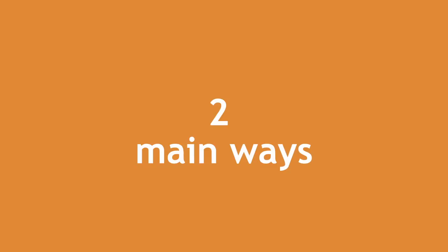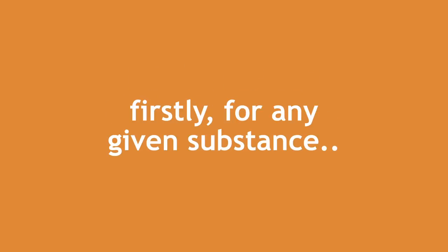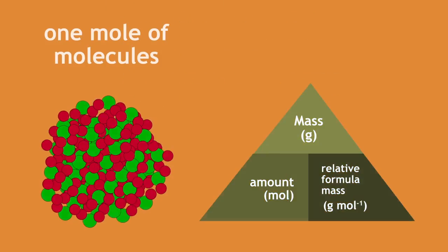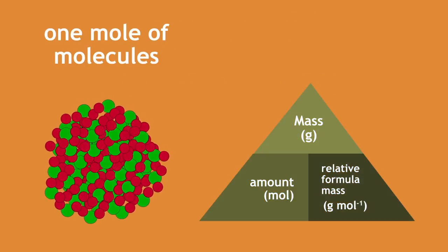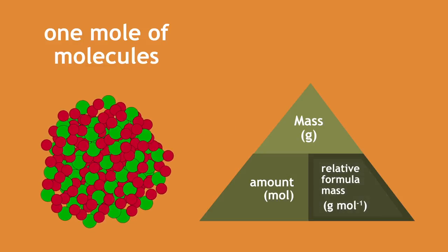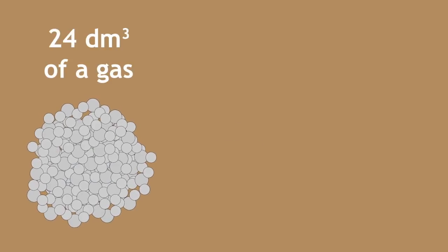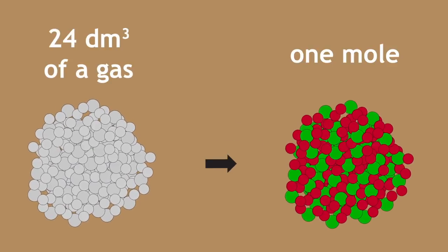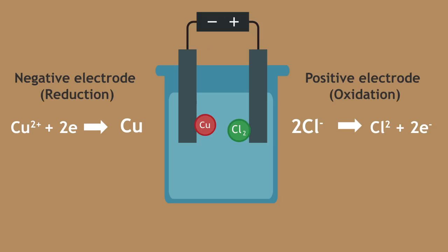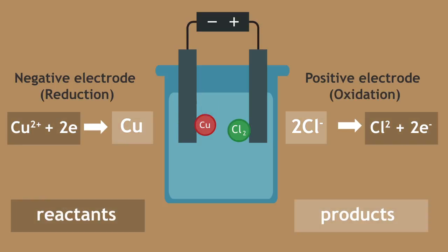At this stage you should be aware of three key facts. Firstly, for any given substance, one mole of molecules is equivalent to the relative molecular mass of a substance in grams. Secondly, 24 decimetre cubed of a gas represents one mole. And thirdly, the number of electrons transferred during the electrolysis dictates the ratio between reactants and products.